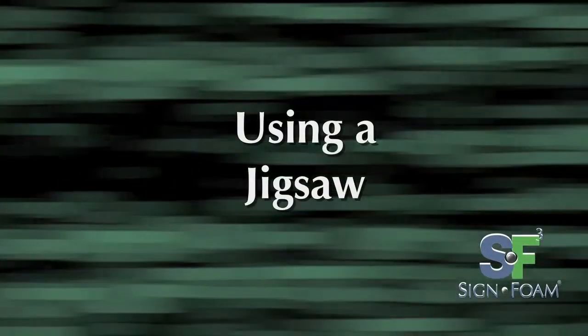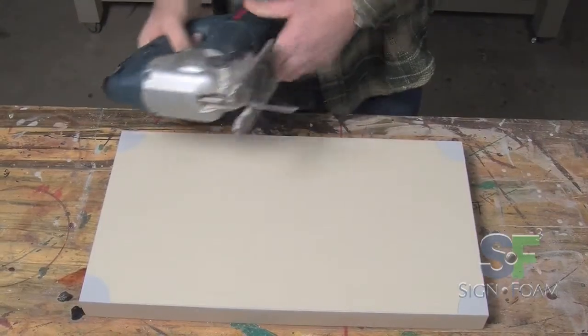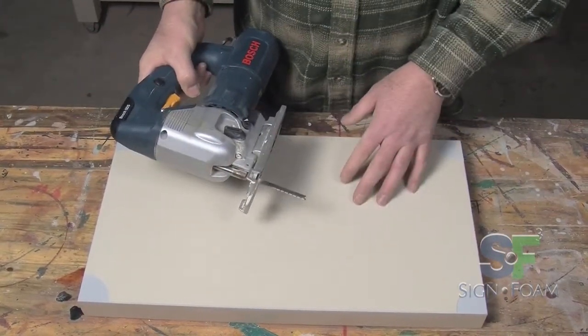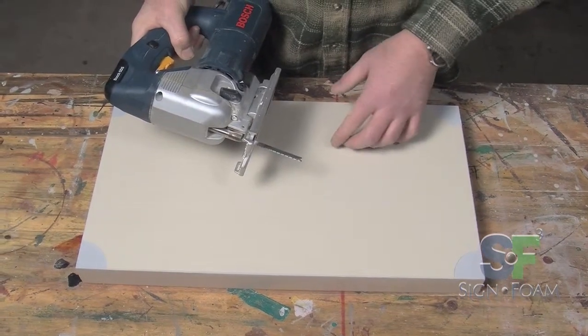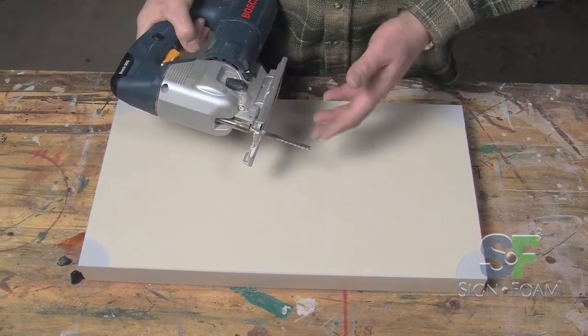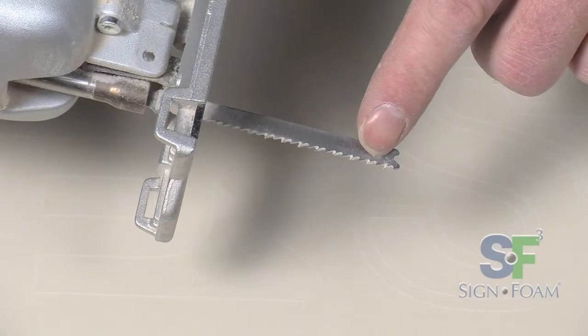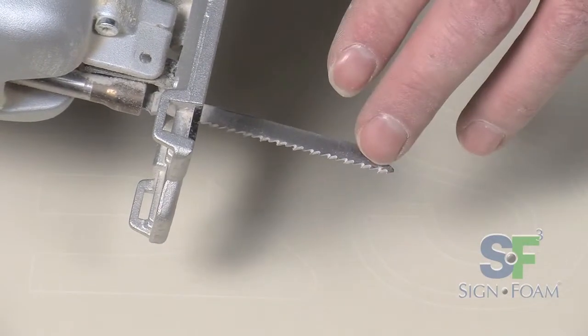Using a Jigsaw. In this example we'll be cutting out the corners using a jigsaw. While it may seem counterintuitive, the finest, smoothest cuts are obtained with a coarse tooth blade. Fine tooth blades tend to bind.